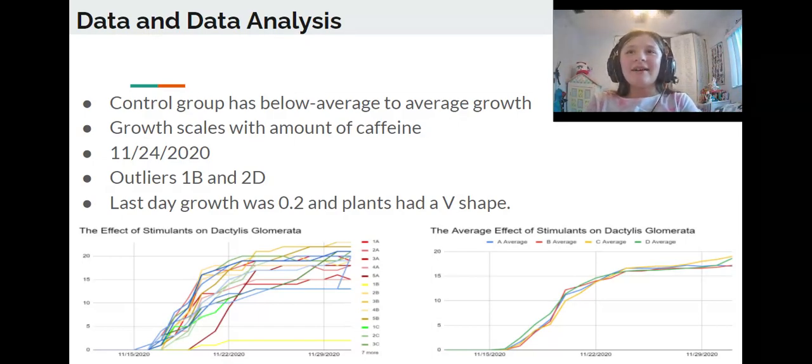B had 17.2 centimeters, which is lowered by 1B. C had 19 centimeters, and D 18.6 centimeters, slightly lowered by 2D. By the last day, the growth was slowed by about 0.2 centimeters per day, and the plants were developing a V shape.